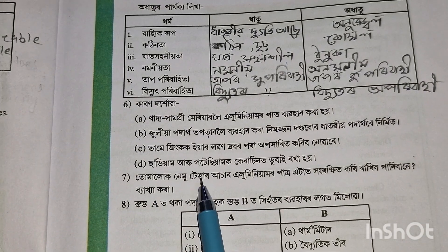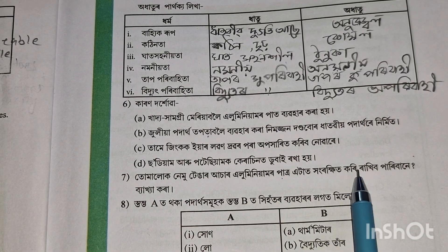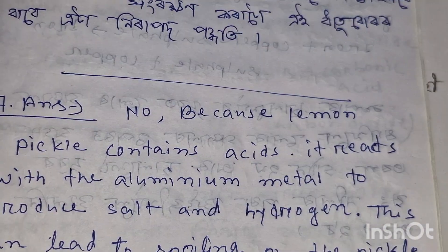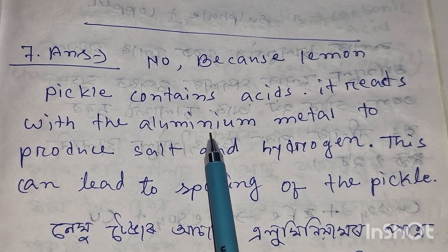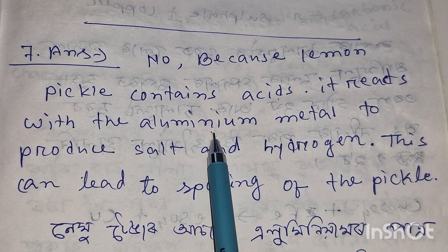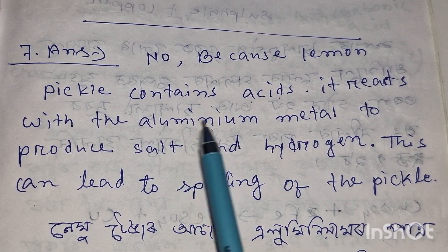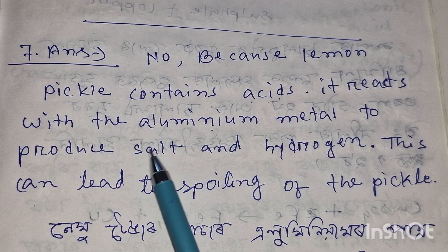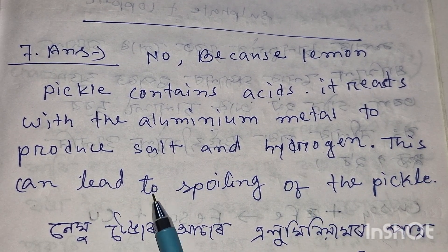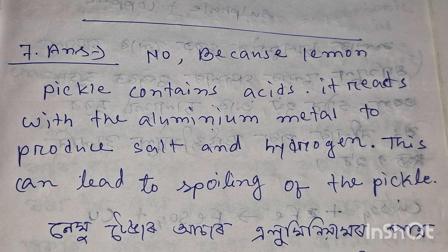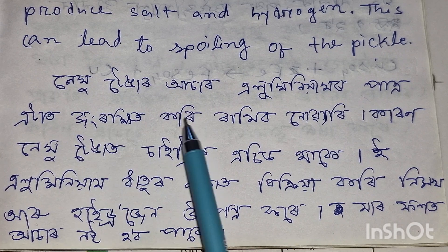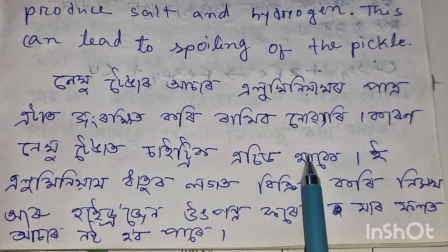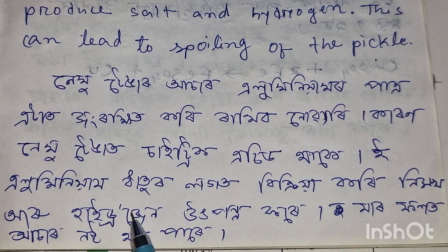Question number 7: The acidic content in lemon and pickle reacts with aluminum metal to produce salt and hydrogen gas. The salt can lead to spoiling of the food. This is why aluminum vessels are not suitable for storing pickles or lemon-based foods; the hydrogen gas produced causes further problems.